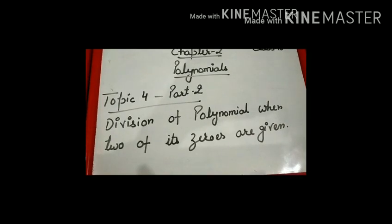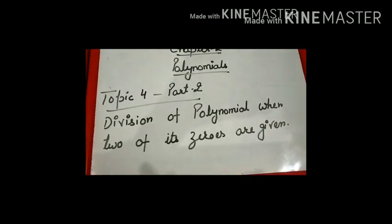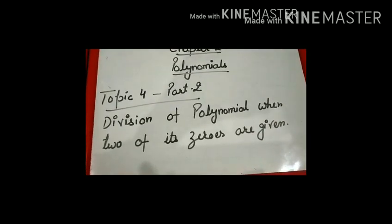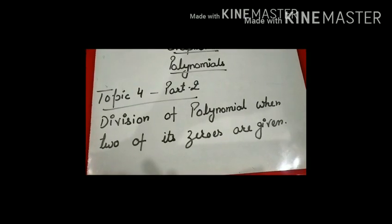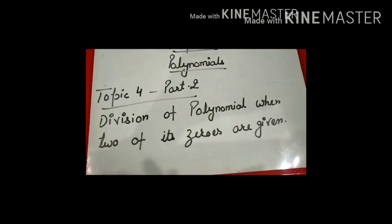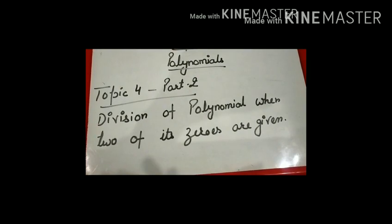We have completed division of polynomials. Now today's second topic is: division of polynomial when two of its zeros are given.